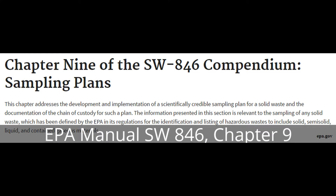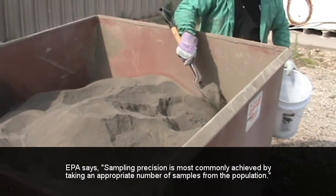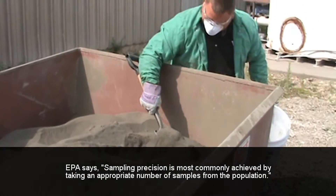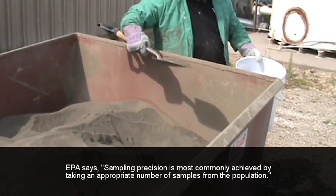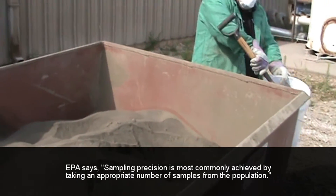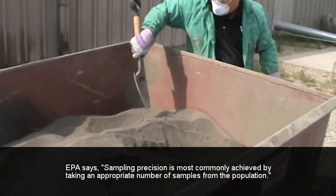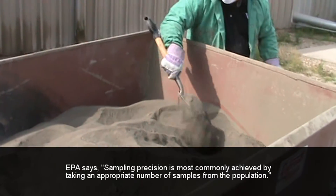EPA Manual SW 846 Chapter 9 addresses the proper ways to conduct sampling, but as with most federal documents, it can be over-technical. It is our intention to simplify this for people wishing to characterize a waste as hazardous or not hazardous.